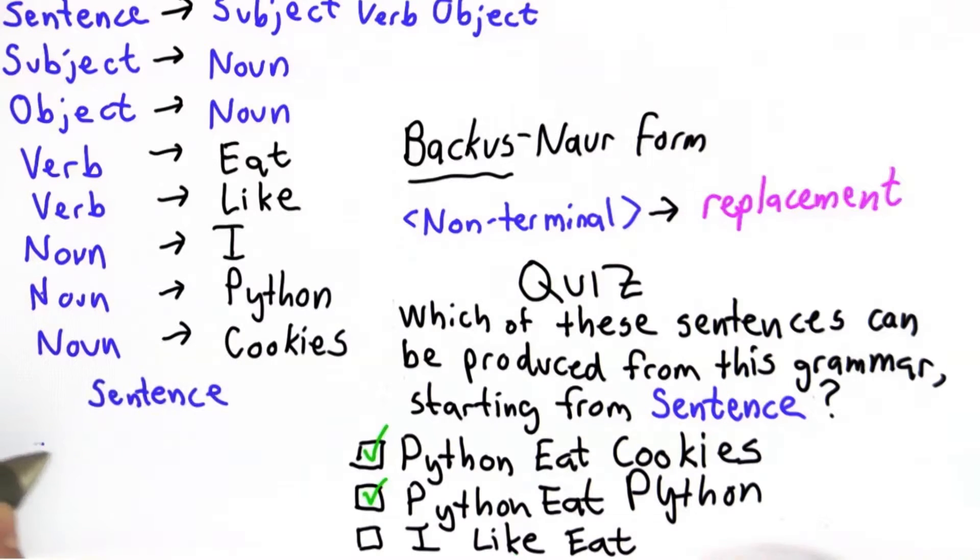So if we start from sentence, well, we only have one rule from sentence, so we're always going to end up with subject, verb, object.